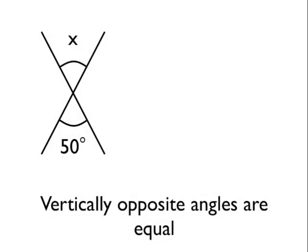So if we had a question like this, where we've got two straight lines which cross each other, and we're told that the angle at the bottom here is 50 degrees, and we need to know the size of angle X, because vertically opposite angles are equal, we know that angle X must be 50 degrees as well.